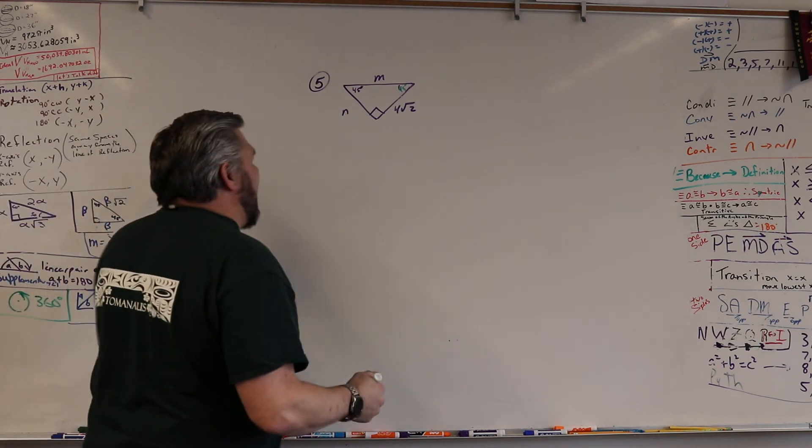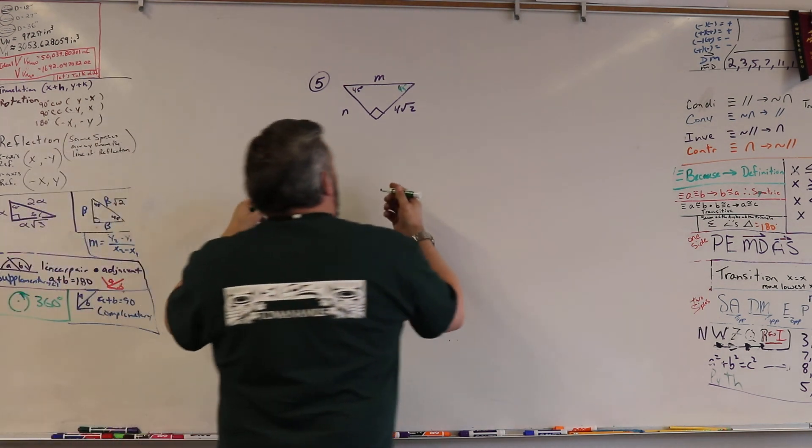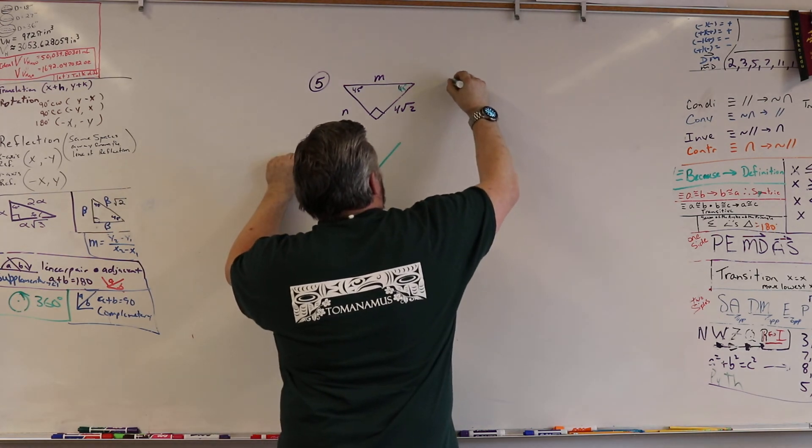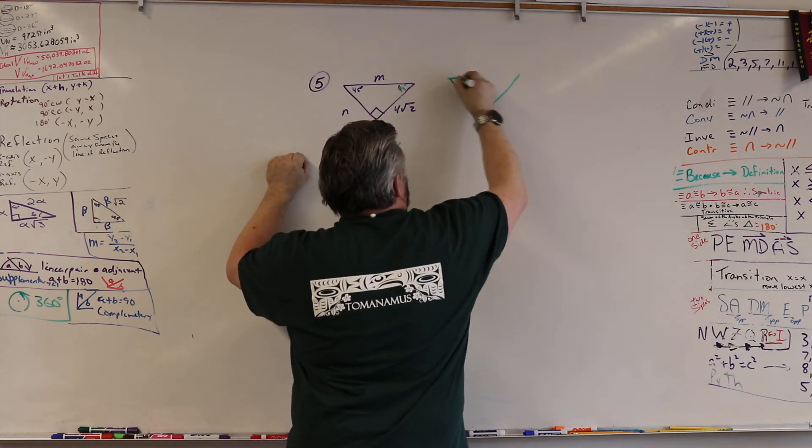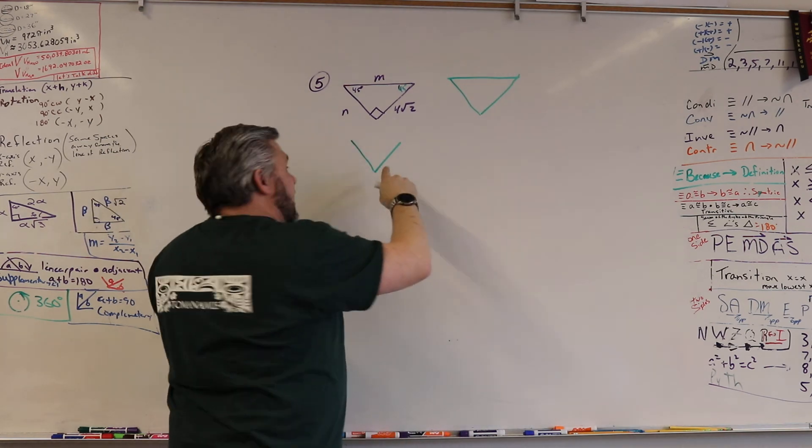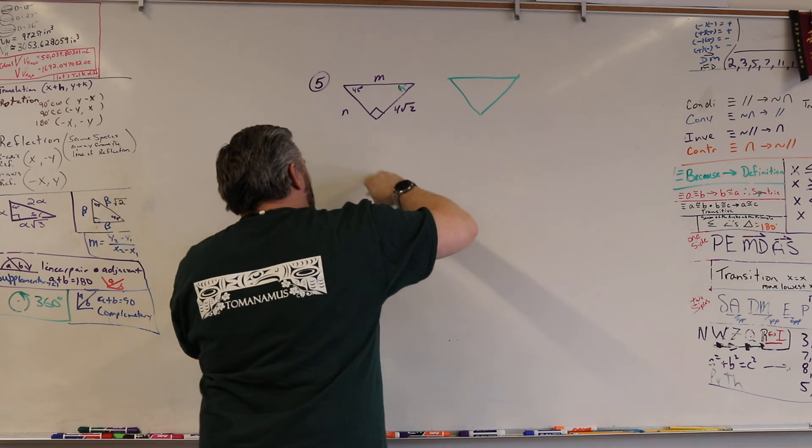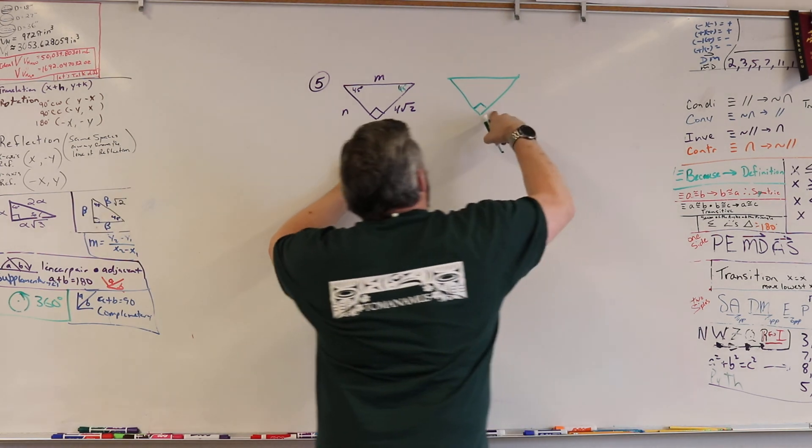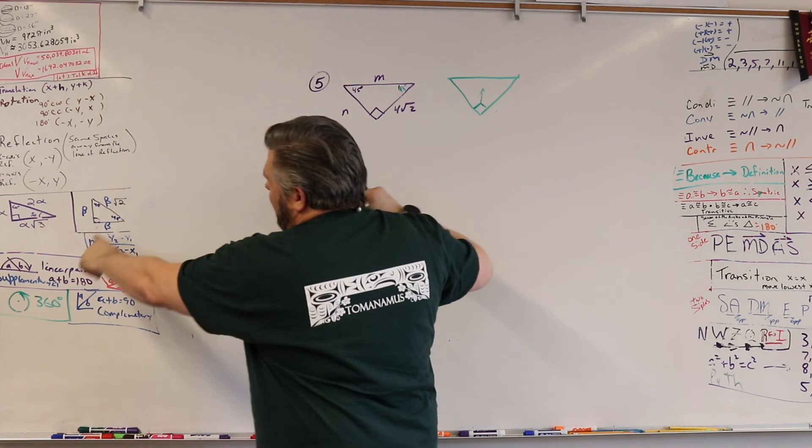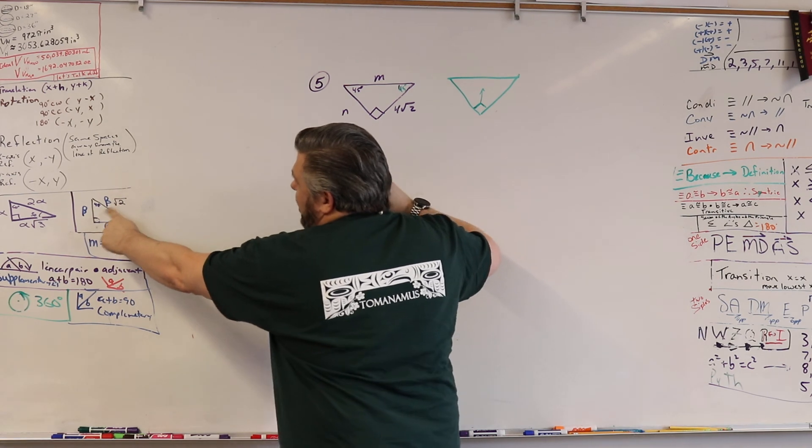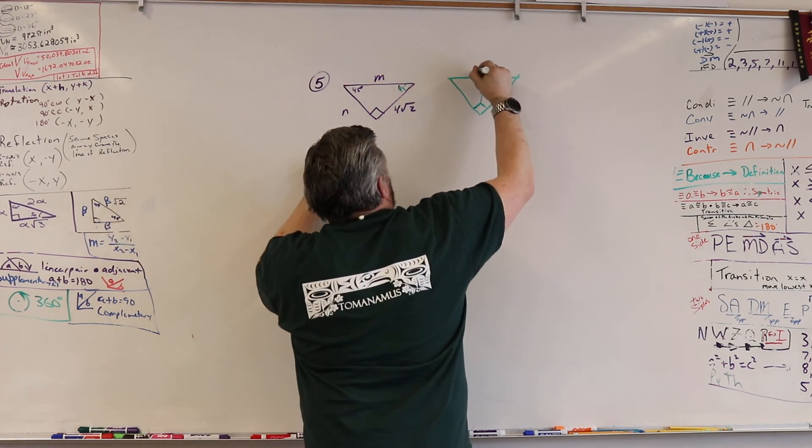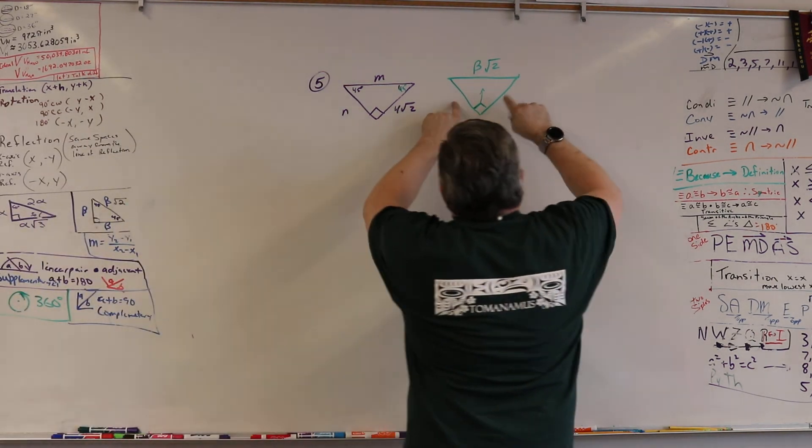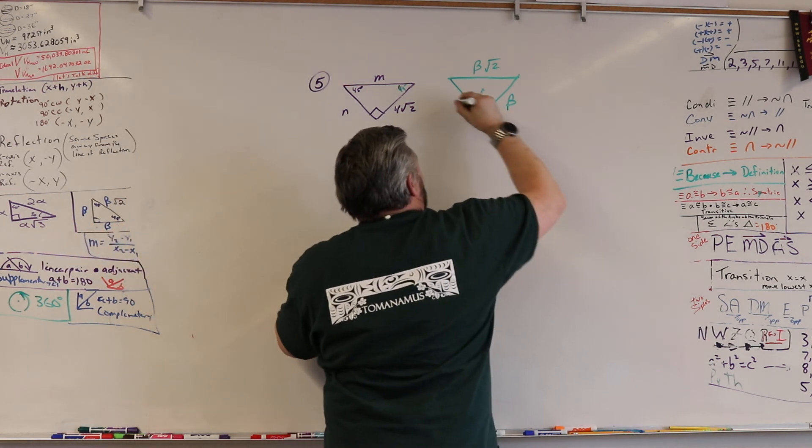All right, so the way I deal with this is I draw the same thing. Now I can go underneath it or I can go next to it. Which one do you guys like the most, next to it or underneath? Next? Okay, let's do that one. It seems pretty much across the board. All right, so it's going to have a 90 degree. Now what's across from the 90? B square root 2. Yeah, beta square root 2.